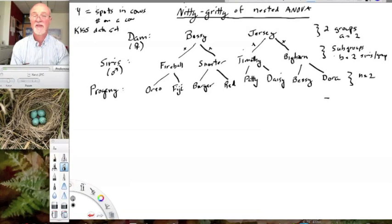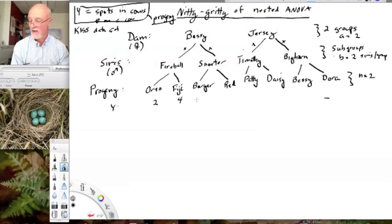We're going to measure the number of spots. So our y variable is the number of spots. Who are we measuring that on? We're measuring that on the progeny. We're going to make inferences, then, about the control of spot number by sire and by dam, because we can partition the variation among those. I'm going to give you sample y numbers that we might get out of this.